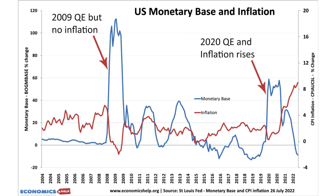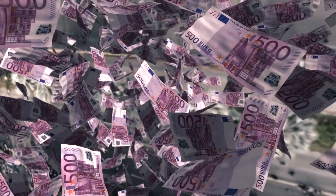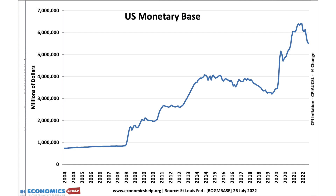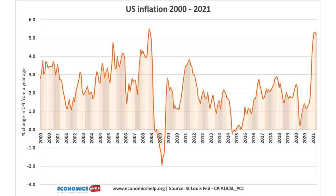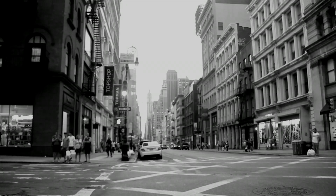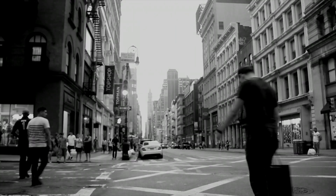Quantitative easing is effectively the same thing as printing more money, except they didn't print more notes — they just created it in the central bank ledger. This graph shows the US monetary base and US inflation. The US monetary base is a measure of the money supply called M0 — basically notes and coins in general circulation and bank deposits in the central bank's reserves. We can see that in 2008–2009, the Federal Reserve had a very significant increase in the money supply, and the money supply almost doubled, increasing by over 100% in 2009. But look at what happened to inflation — it actually fell, going into negative territory, which is deflation. So in 2009, this big increase in the money supply had no effect on causing inflation.